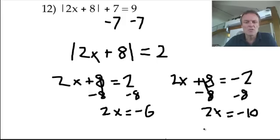So it looks like we're going to get an answer of, if you're dividing by 2, that will give you negative 3. And dividing by 2 here will give you negative 5. So I'll just come over here.